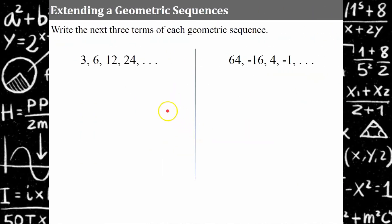Now you're given two geometric sequences. Use the common ratio to write the next three terms of each sequence. Please pause and hit play when you're ready.